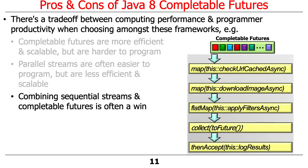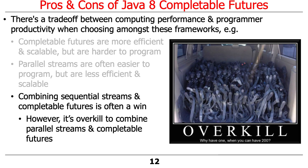Combining sequential streams with completable futures is often a win because you get a pipeline-like effect while also handling things asynchronously — you'll see that in assignment four. But it's usually overkill to combine parallel streams with completable futures because then you have too much parallelism going on, and it probably isn't a win. It's like a van full of seat belts — why have one when you can have 200? Having hundreds of threads doesn't actually give you a win; it usually makes things slow down.